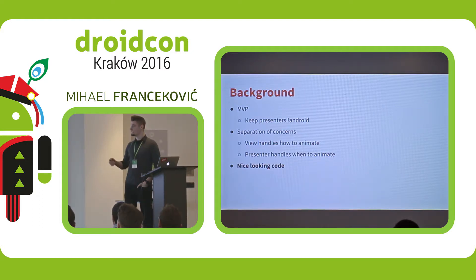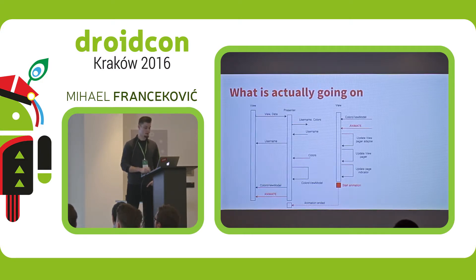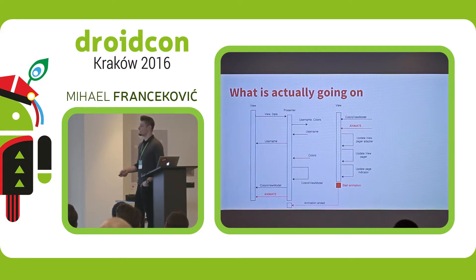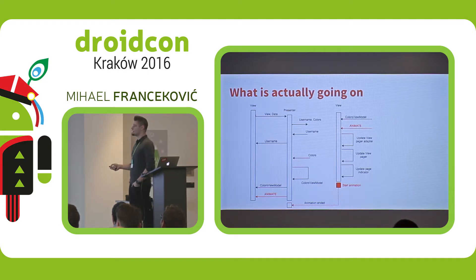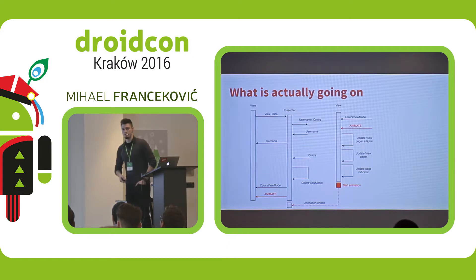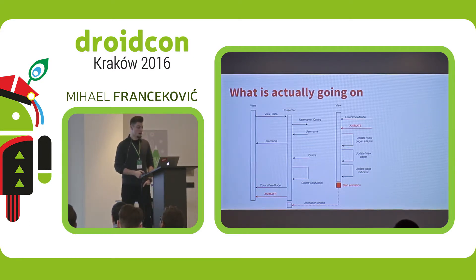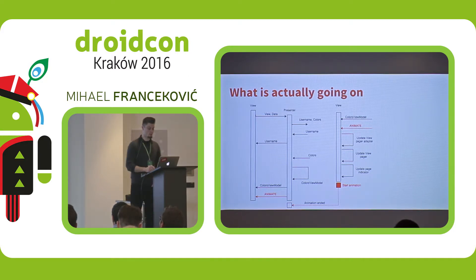After all, we want to have nice-looking code. We see that the presenter got the data, gave the data to the view, and says: okay, now animate. But what's going on in the view side? When the view gets the data, it has to update the view pager and do some additional stuff. It cannot just start the animation when the presenter wants it. And this is the problem here — so how do we manage that?